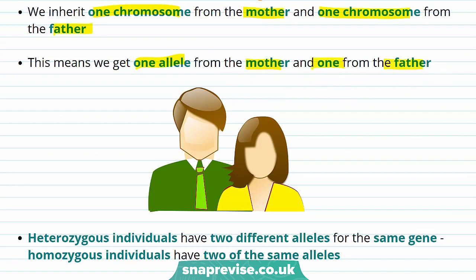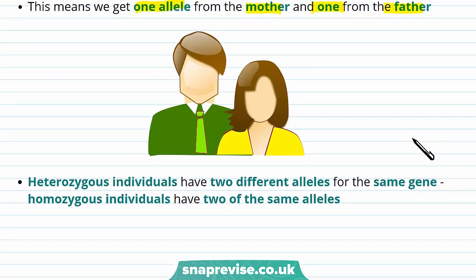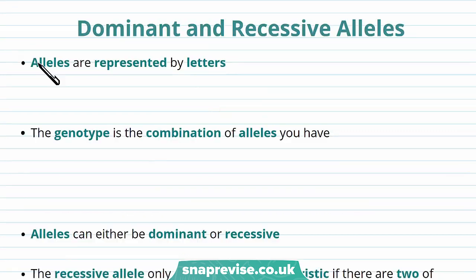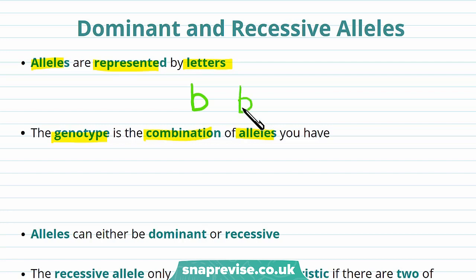There are also some terms related to alleles that you need to know. Individuals are said to be heterozygous when they have two different alleles for the same gene. Homozygous individuals have two of the same alleles. Alleles are actually represented by letters. For example, the allele for a single gene such as eye colour could be represented by the letter B. The genotype is the combination of alleles you have. These alleles could combine during fertilisation, and as you inherit one allele from the mother and one allele from the father, this would result in the genotype BB.